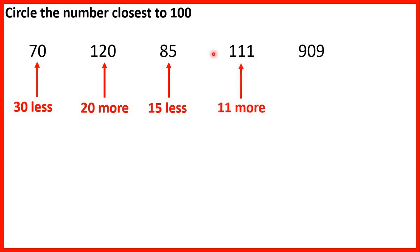111 is 11 more than 100, and 909 is not close to 100 because that has 9 as the hundreds digit. So the number closest will be the number with the smallest difference. So that's 111, because that only has a difference of 11, and all of our other numbers have a difference of more than 11.